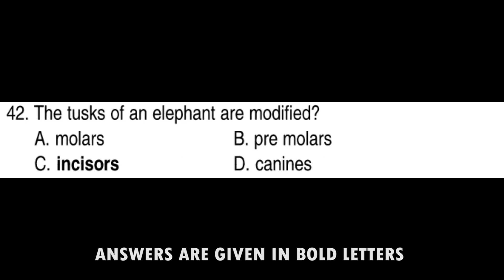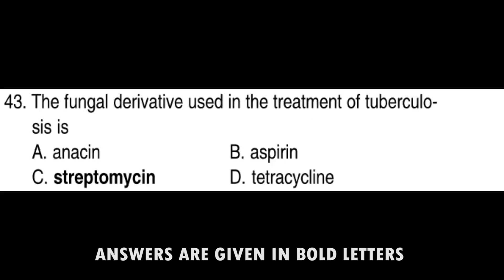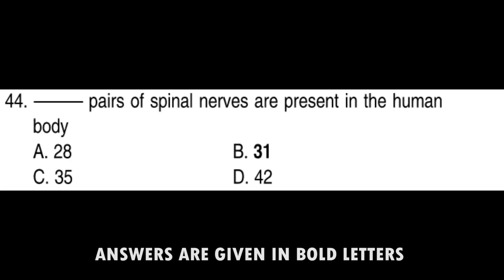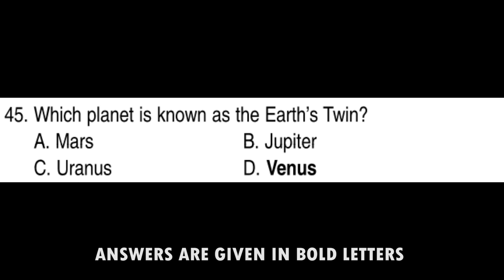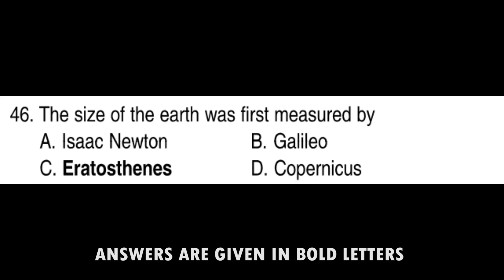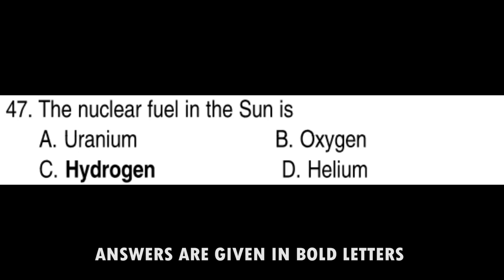Dengue fever is spread by Aedes aegypti. The tusks of an elephant are modified incisors. The fungal derivative used in the treatment of tuberculosis is Streptomycin. 31 pairs of spinal nerves are present in the human body. Which planet is known as Earth's twin? Venus. The size of Earth was first measured by Eratosthenes.